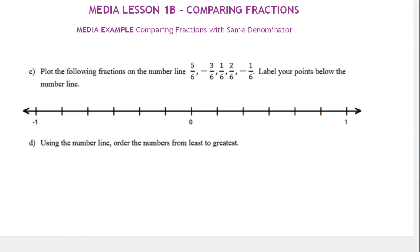Let's look at the next part: plot the following fractions on the number line and label your points below the number line. Notice they all have the same denominator and our number line is already broken into sixths. Starting with 5/6: this is zero, 1/6, 2/6, 3/6, 4/6, 5/6 — I'll label it underneath. Now we have negative 3/6, so starting at zero we go to negative 1/6, negative 2/6, negative 3/6. Then 1/6 is to the right of zero, then 2/6, and finally negative 1/6 which is one sixth to the left of zero.